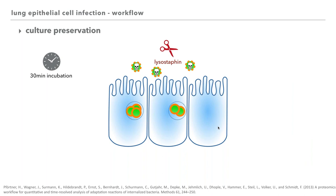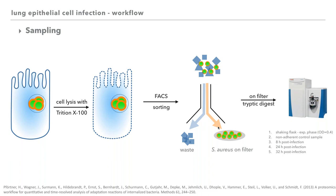Fresh medium was added containing lysostaphin, which effectively kills S. aureus cells. Therefore, S. aureus cells which were not internalized or released from destroyed cells were eliminated, preserving the cell culture and ensuring only internalized S. aureus can survive. Samples were taken using Triton X-100 to lyse the host cells, followed by FACS analysis and FACS sorting to enrich bacteria on the filter and separate them from host cell debris. S. aureus cells on the filter were tryptically digested, peptides desalted, and analyzed via DIA-MS on the Q-Exactive mass spectrometer.